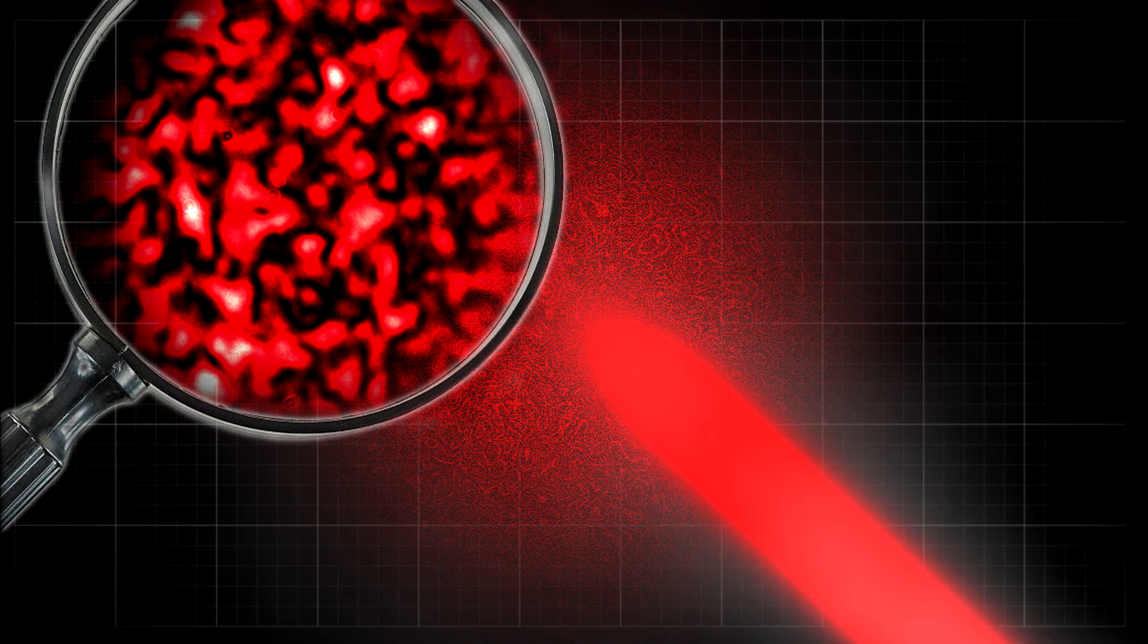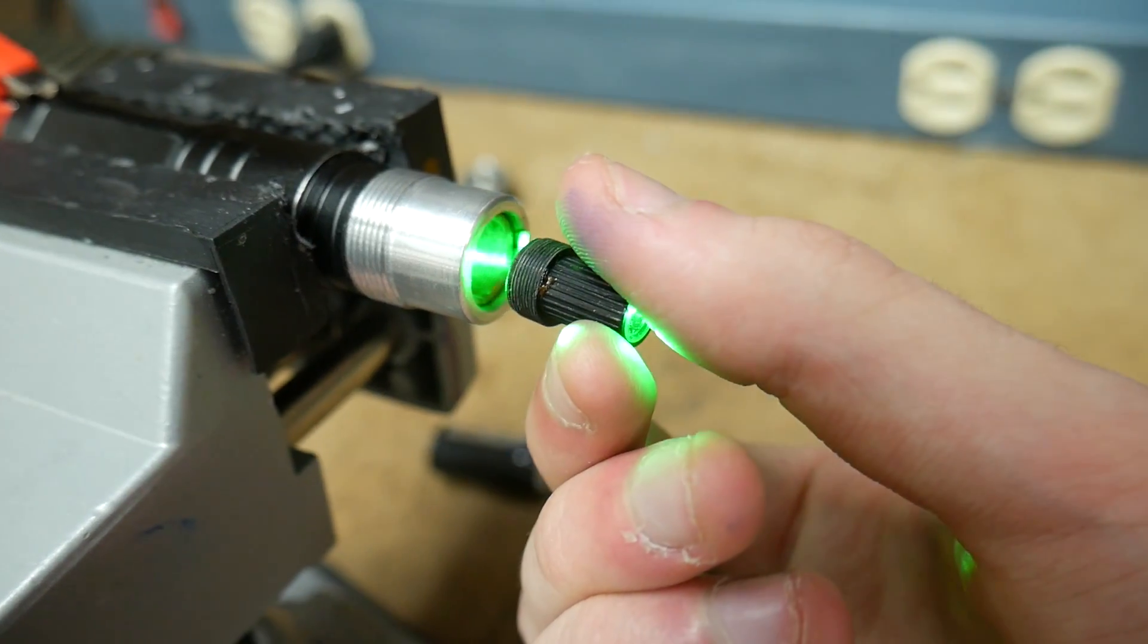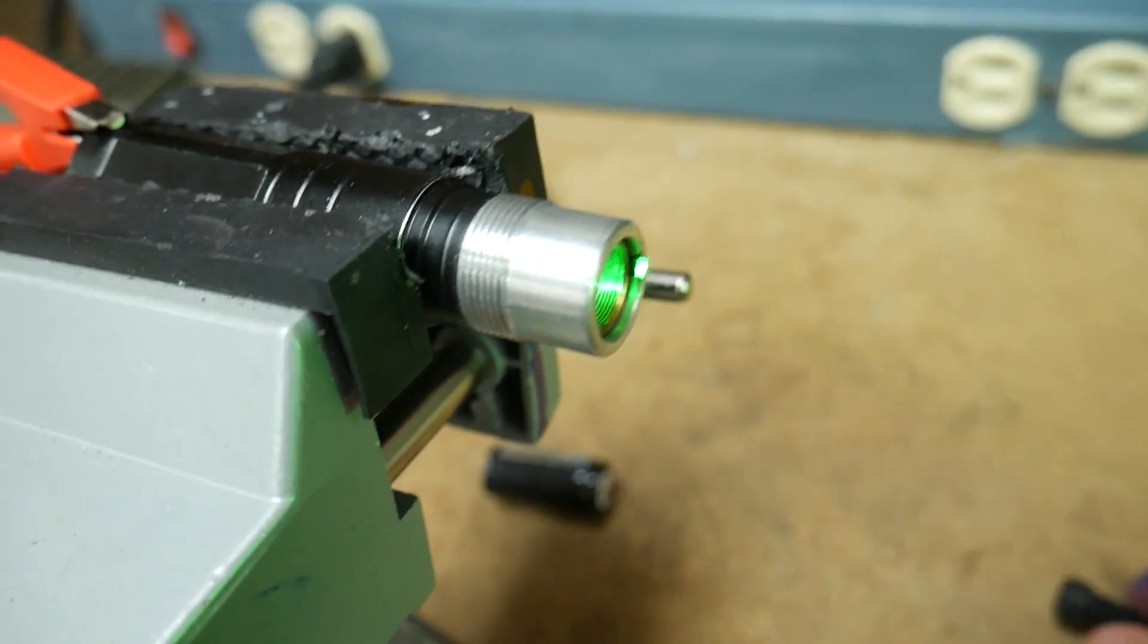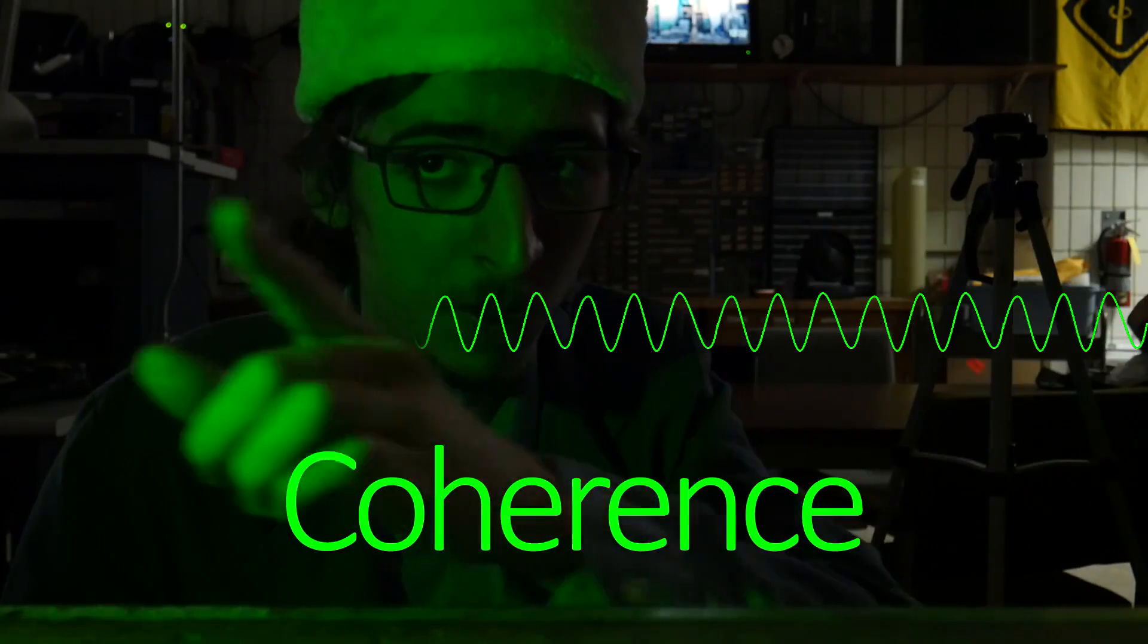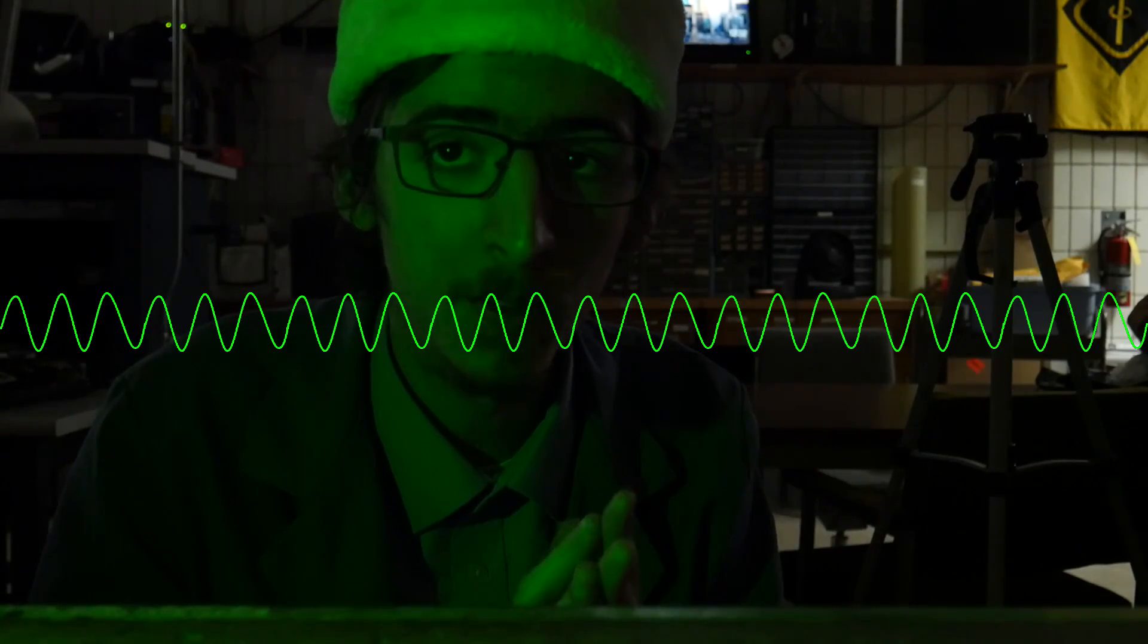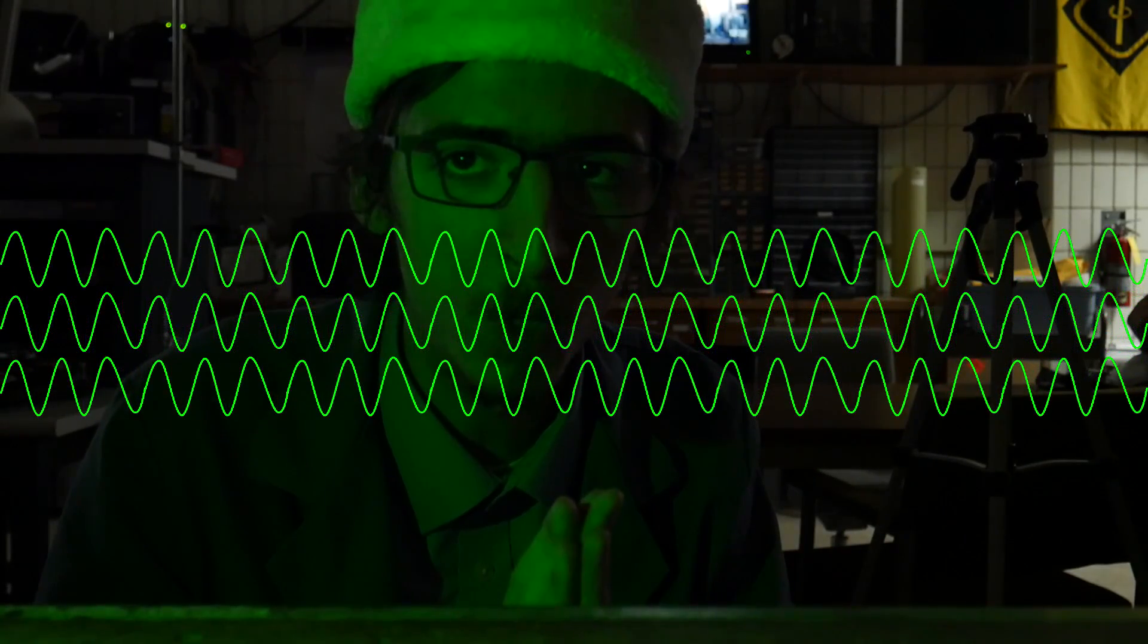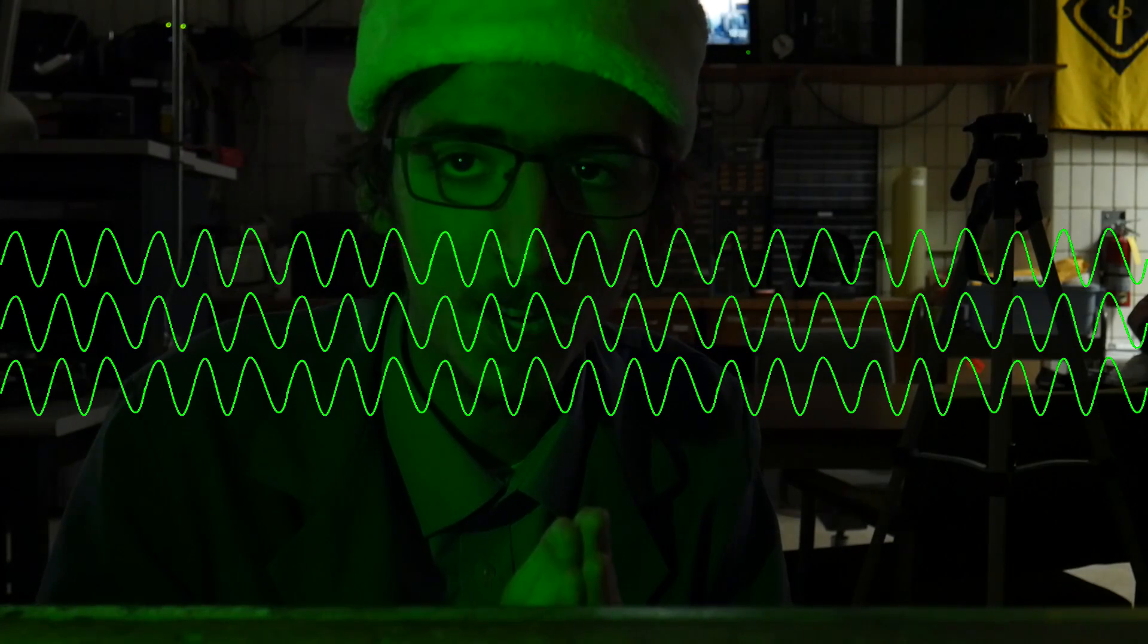You only see this in lasers and not in normal rays of light like a flashlight because laser light has a special property called coherence. Coherence is a property of laser beams that means that the light coming out of them has exactly the same frequency and exactly the same phase.